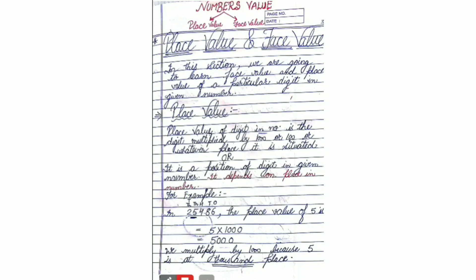First of all, we are going to start with place value. Place value of a digit in a number is the digit multiplied by the thousand, hundred, ten, or whatever place it is situated. The place value of a particular digit in the whole number depends upon the place or position of that digit in the number. You can understand this concept with the help of an example.